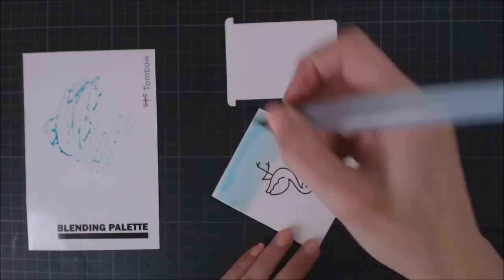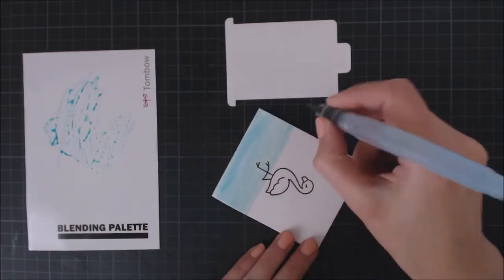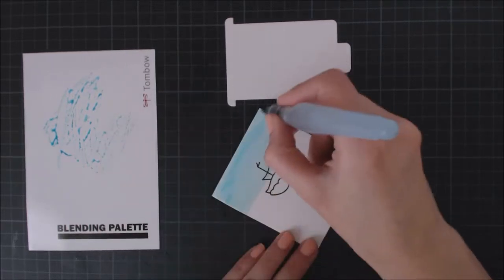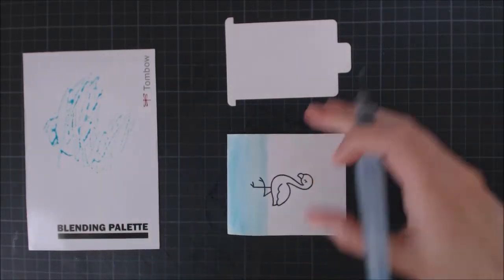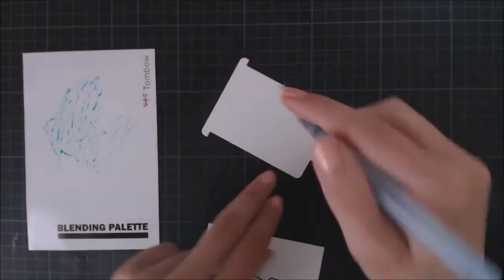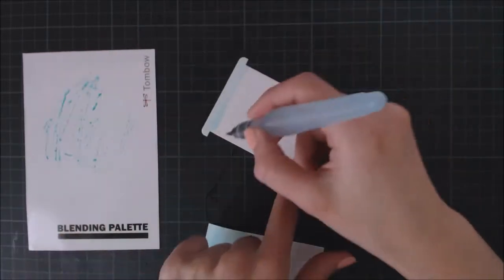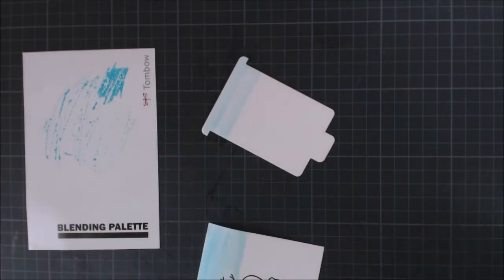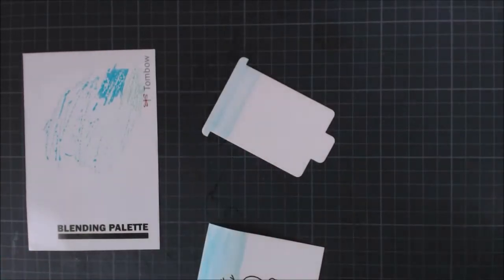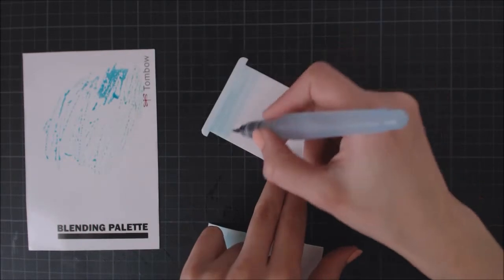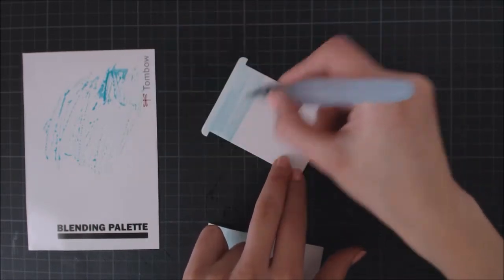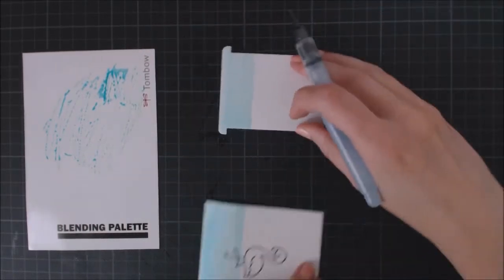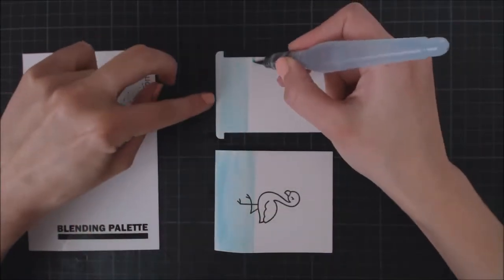For the background, I'm scribbling my markers onto the blending palette, picking the color with my watercolor brush and use it just like watercolors. As I said before, this is Bristol smooth paper. It doesn't take as much water as watercolor paper, but it worked fine for me. But if you don't feel secure about it, use watercolor paper instead.